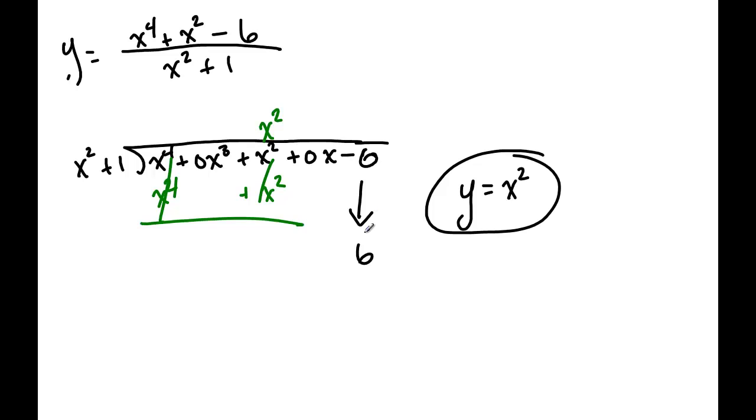So remember, the key to finding a slant asymptote is that the degree of the numerator, as in this case, is higher than the denominator, and to find them you have to use long division. Alright, well thank you very much.